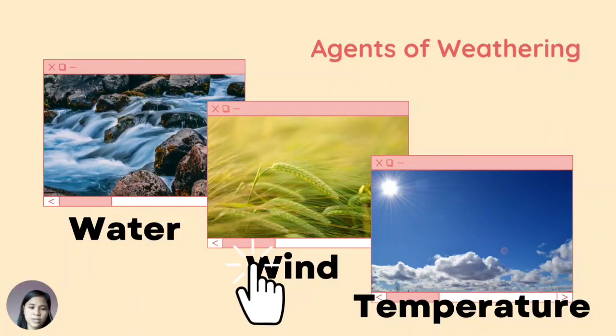Next is wind. Wind is another agent of weathering that causes beautiful formations like the Mahayaw Ark in Sabtang Island, Batanes, Philippines. As the wind blows, it carries sand or small rock particles that scratch the rock's surface. This can bring about mechanical weathering which can also result in different rock formations.